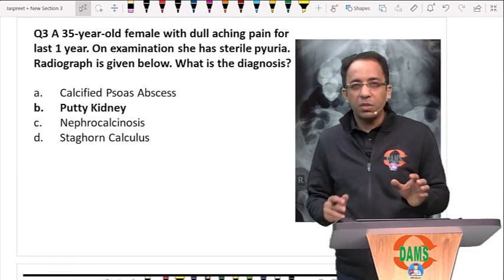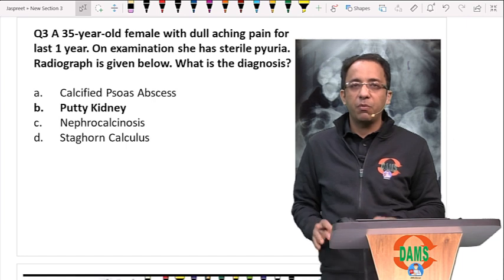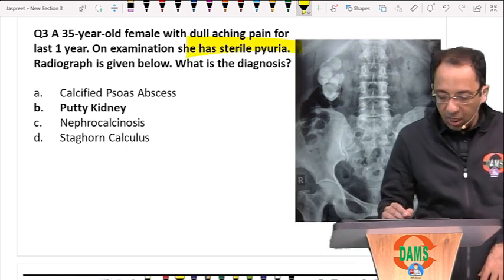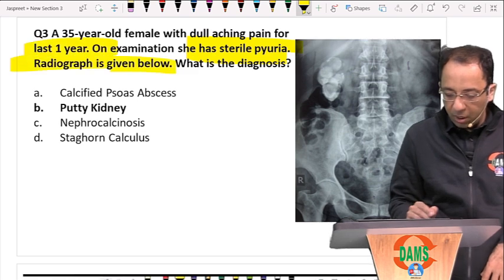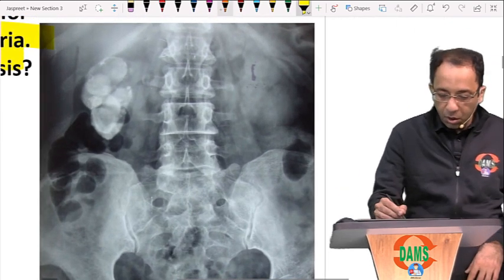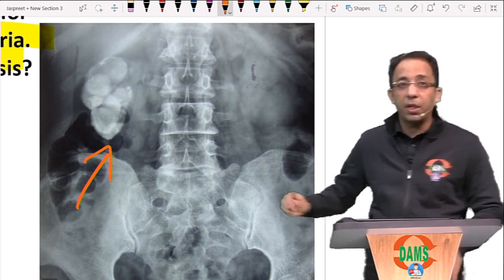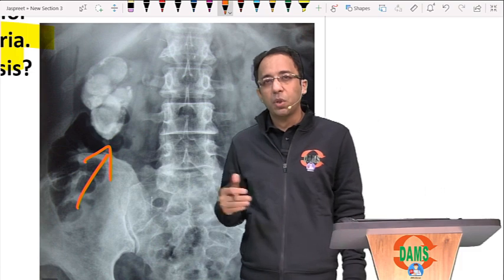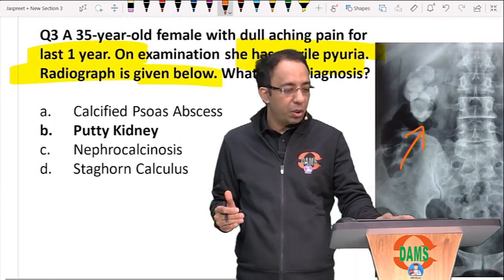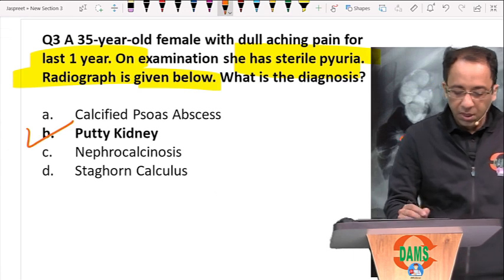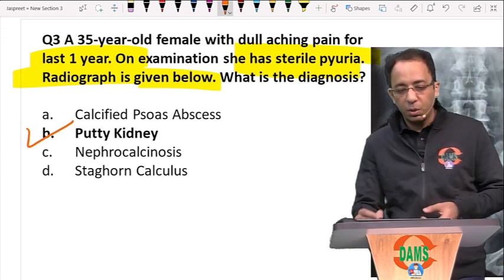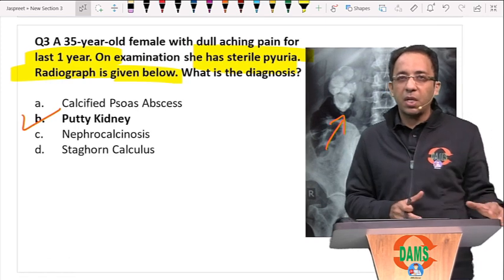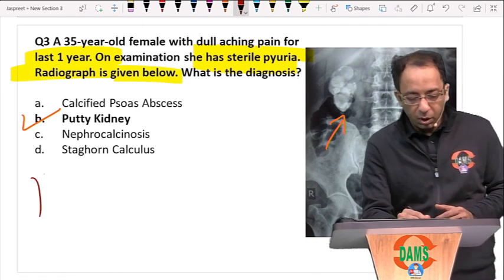Next is a very frequently asked question in NEET PG and FMG exams. The patient has sterile pyuria with a one-year history. On X-ray, you can see a calcified small kidney — this is called the putty kidney or cement kidney. So the answer is putty kidney. Sterile pyuria is a classical feature of tubercular involvement of the urinary tract.